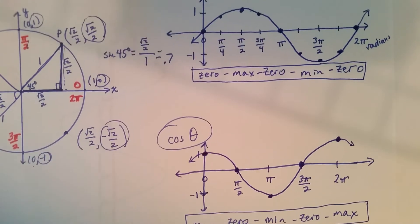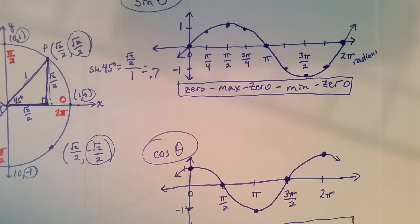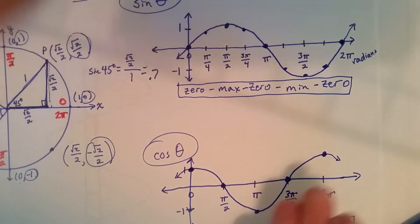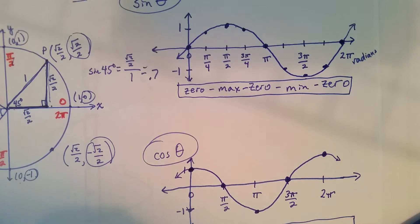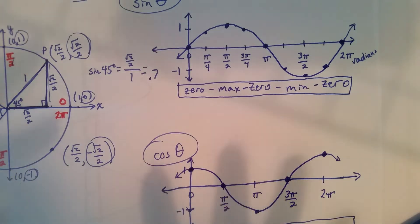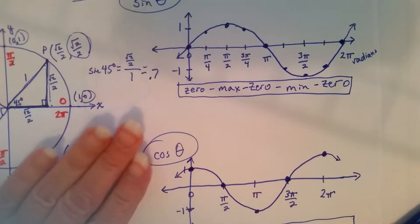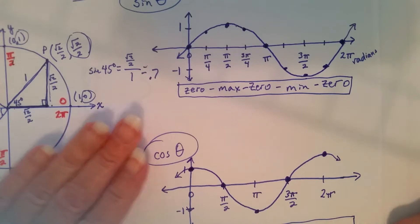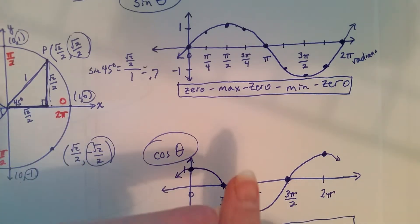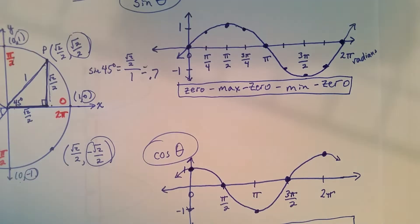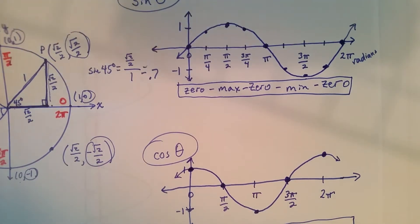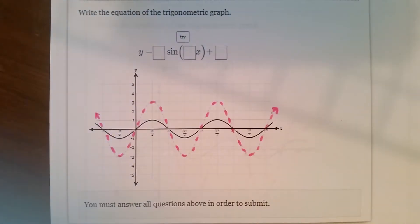Now these sine and cosine curves can change. The amplitude can change, the midline can change, the period can change — which is what you saw when you went through the problems. Now what we're going to do, as opposed to you being given the amplitude, the midline, and the period, you're going to be given a graph and you're going to write the equation of the graph.